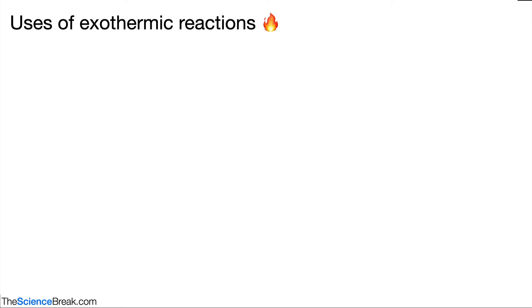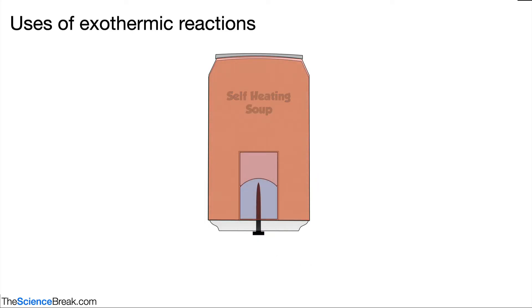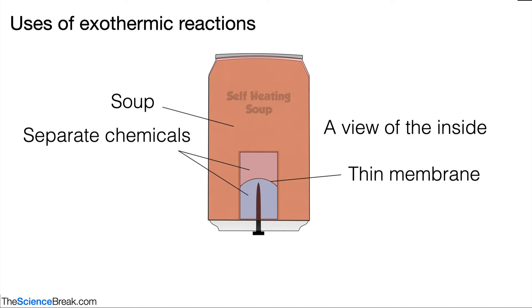Let's take a look at the example of an exothermic reaction first — it can be used in self-heating cans. Here's a can of self-heating soup. At the bottom there's a button. Looking inside, we've got the soup in the main part of the can, but underneath we've got two separate chemicals separated by a thin membrane, which keeps those two chemicals separate.